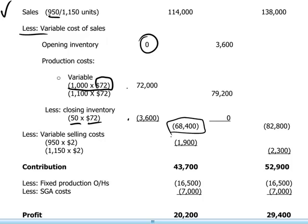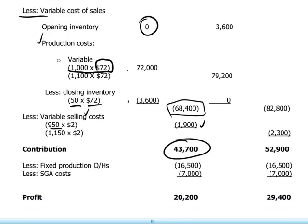Variable selling costs in year one are $2 for the 950 units sold, or $1,900. Deducting both variable production costs and variable selling costs gives us a contribution in year one of $43,700. The actual fixed production overheads and SGA costs are then deducted to give us a profit of $20,200.